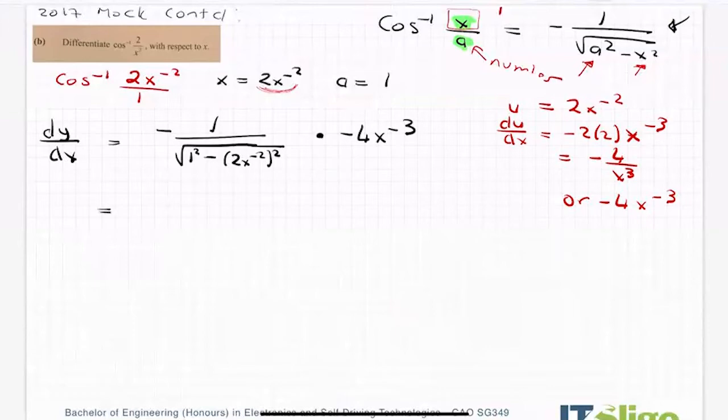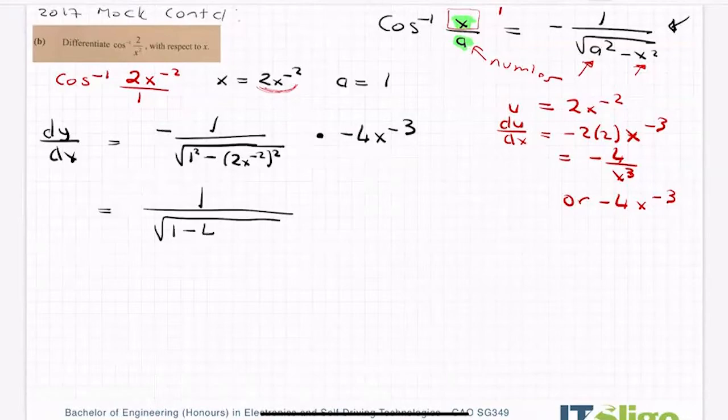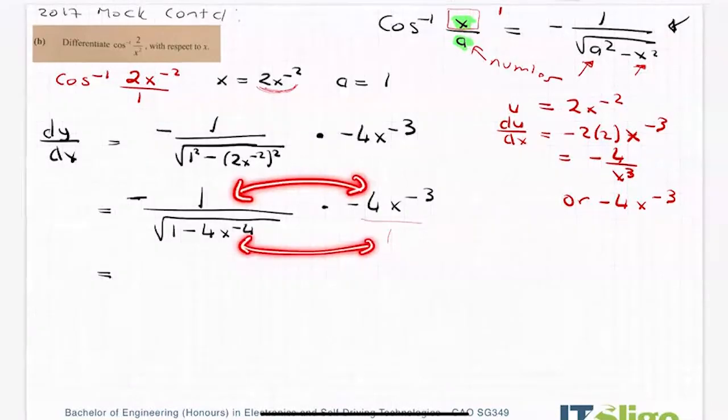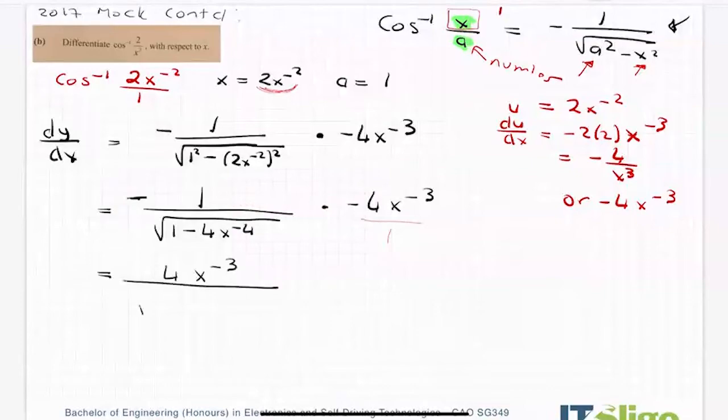Okay, so it's equal to 1 over the square root of 1 squared is 1 minus 2 squared is 4, x to the minus 2 squared is minus 4, multiply by minus 4 over x to the minus 3. Now I just top by top. You can imagine that is over 1 if you want, but to multiply fractions, it's top by top and then bottom by bottom. So on the top, I have a minus by a minus, so I'm going to get a plus. So I have 4x to the minus 3 over the square root of 1 minus 4x to the minus 4. And that's your full answer.